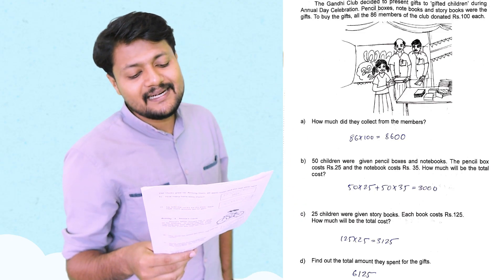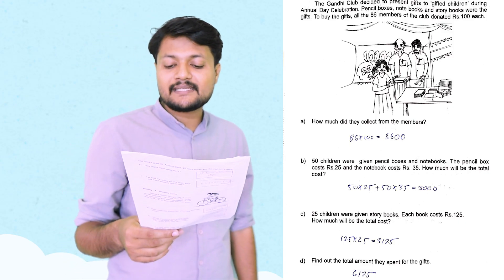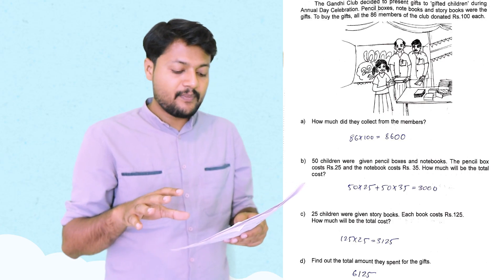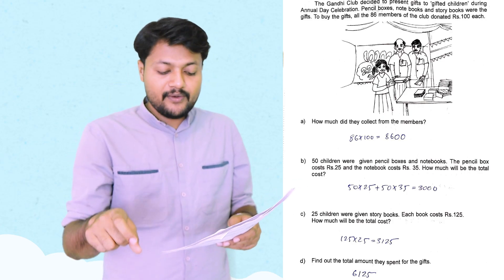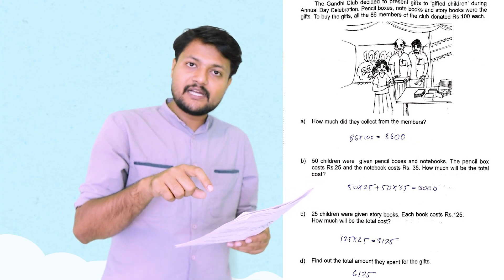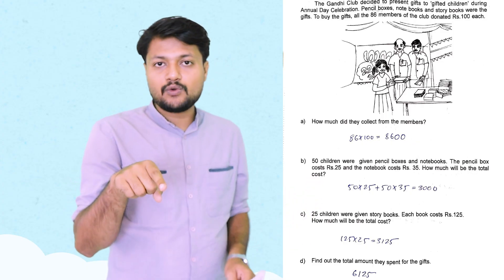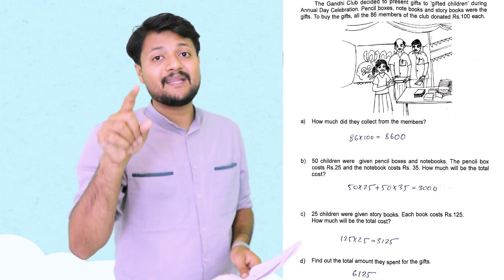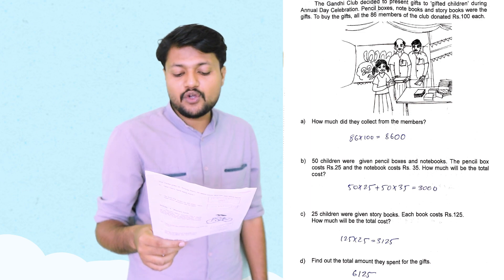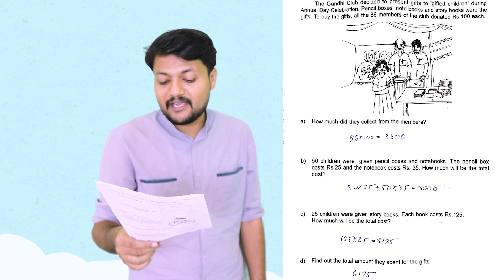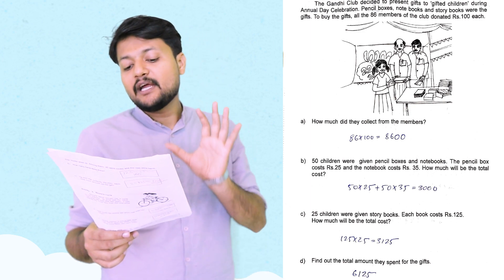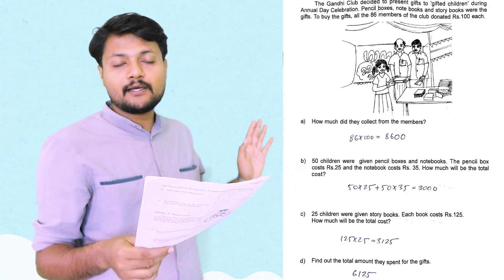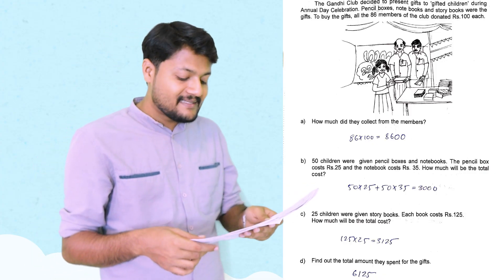25 children were given story books. Each book cost Rs. 125. How much will be the total cost? 125 into 25. That is equal to 3,125. Find out the total amount spent for the gifts. The total amount is 3,000 plus 3,125. It is 6,125.